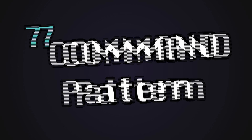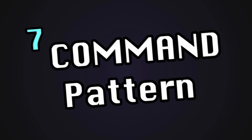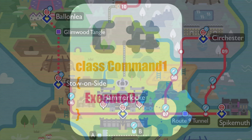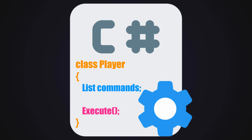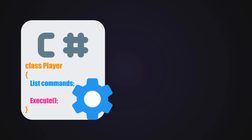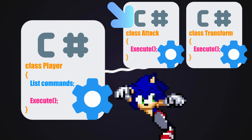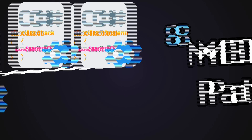The command pattern deserves a closer look. First, we have a queue of requests that need to be performed — representing, for example, the locations a player needs to visit. Each request is represented by an object or command. The pattern starts with an empty queue and executes each command in order as they're added, delegating them to a separate object. This results in a class that isn't coupled to any request and is independent of how each command is executed.